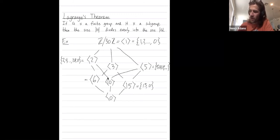What's the subgroup generated by 6? That has 6, 12, 18, 24, and then 30, which is 0.